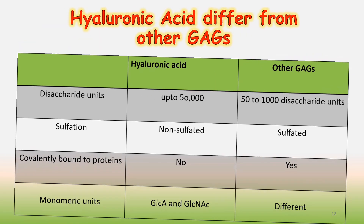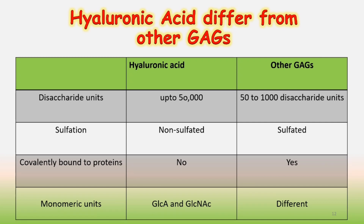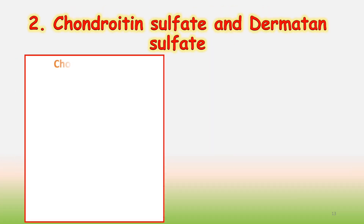Hyaluronic acid is different from other GAGs in the following ways: it has disaccharide units up to 50,000 while other GAGs have around 52,000; hyaluronic acid is non-sulfated while other GAGs are sulfated; it is not bound to proteins while other GAGs can bind to proteins; and it has glucuronic acid and N-acetylglucosamine as monomeric units while other GAGs have different subunits.